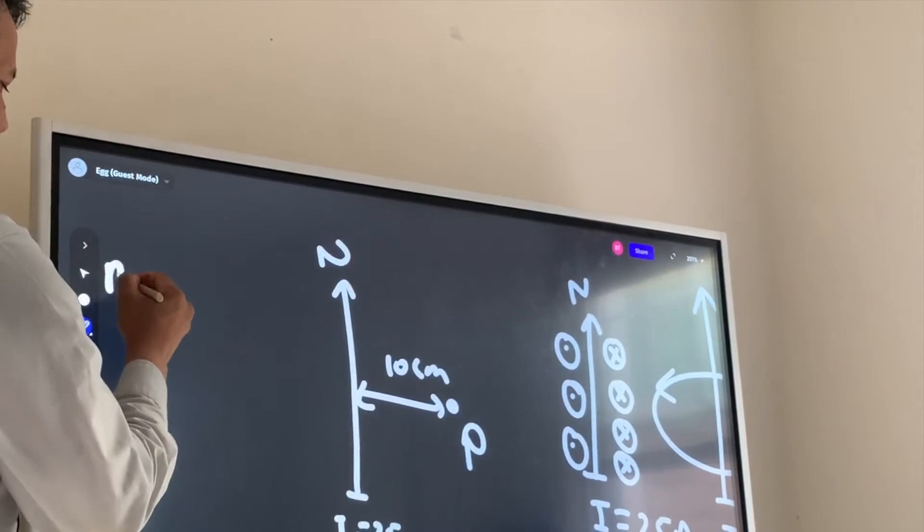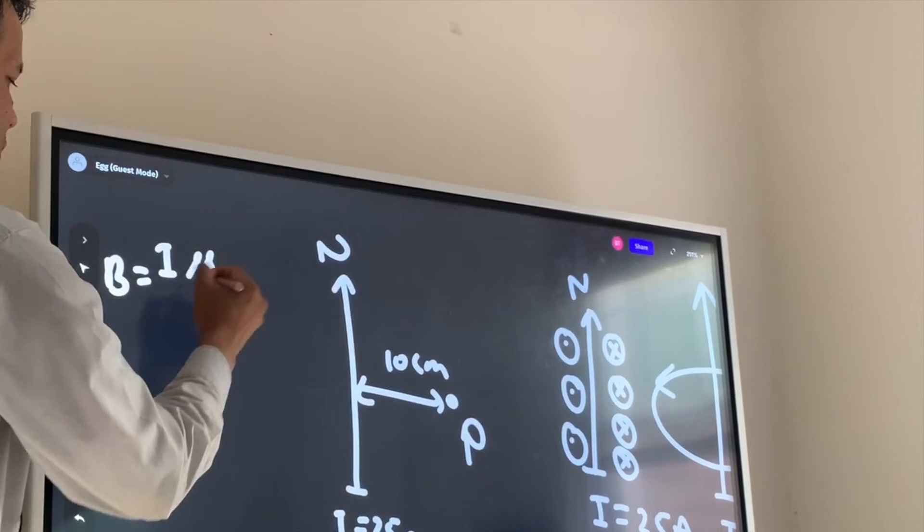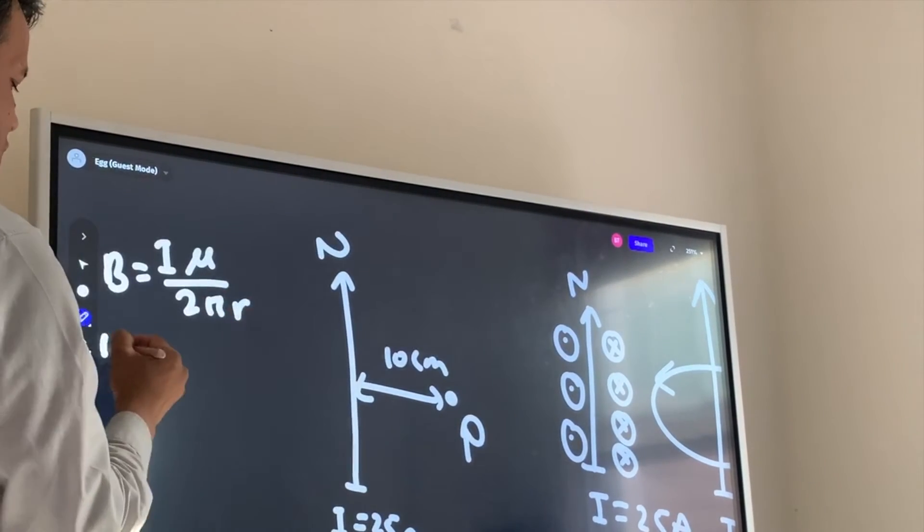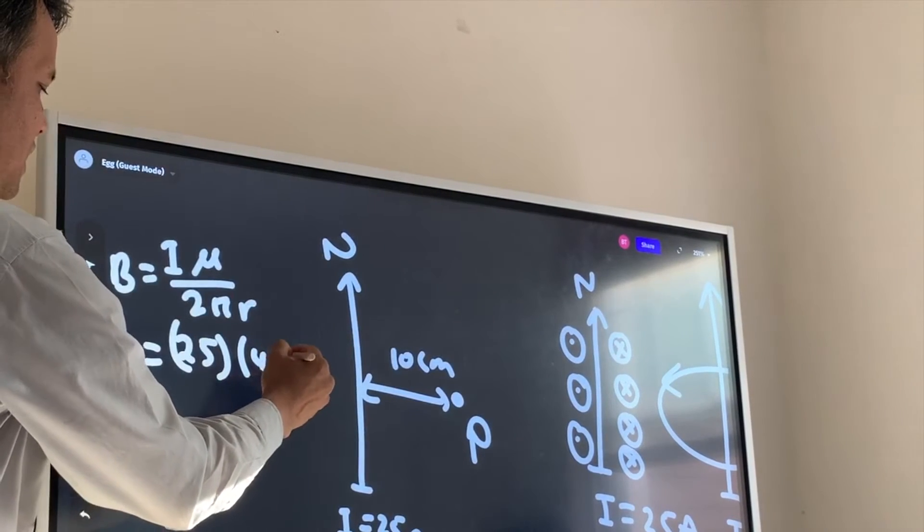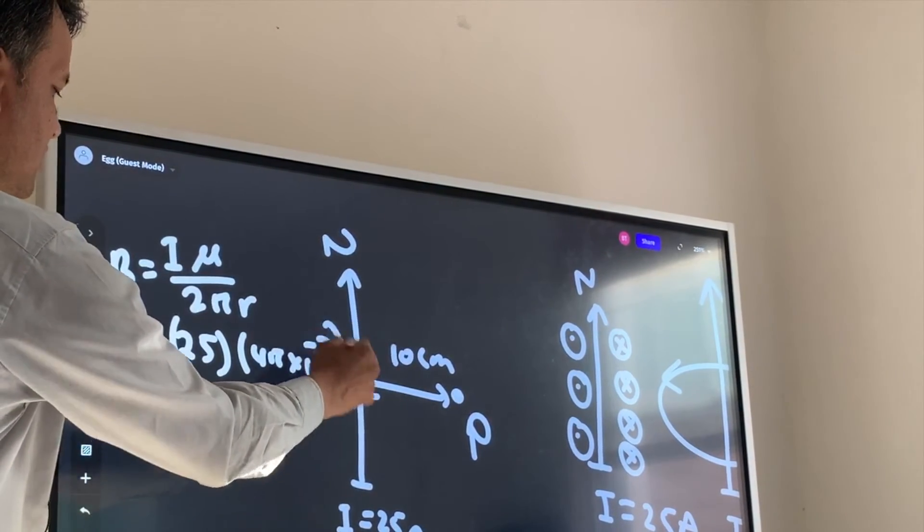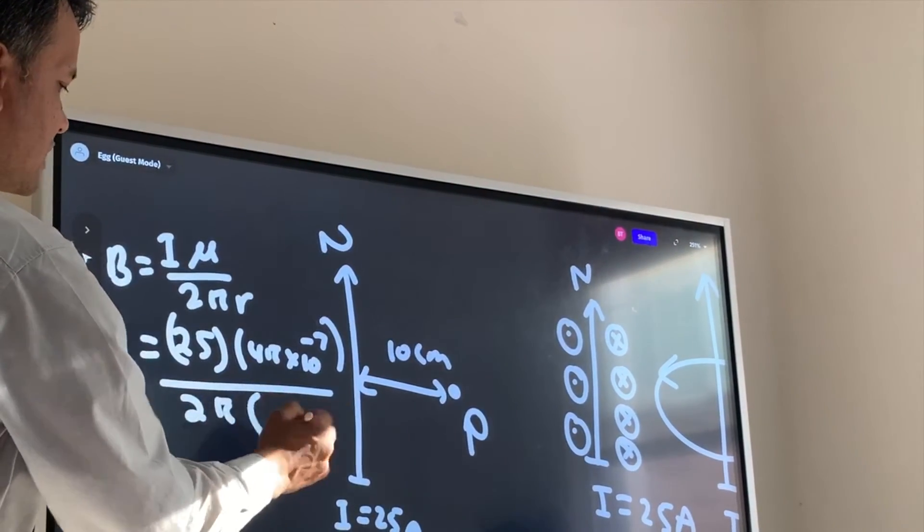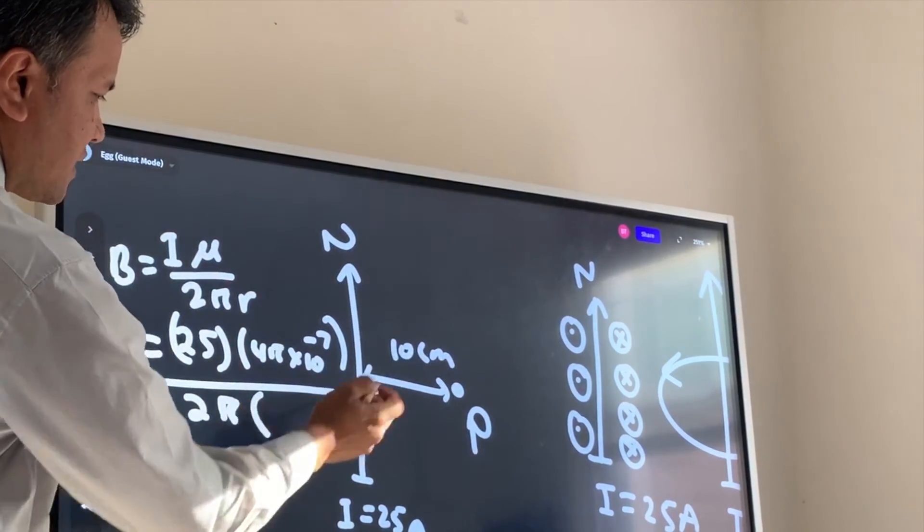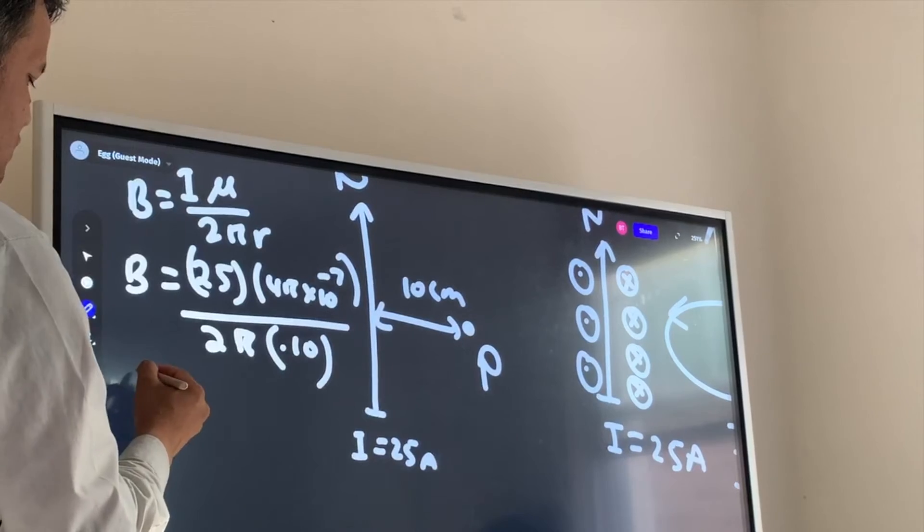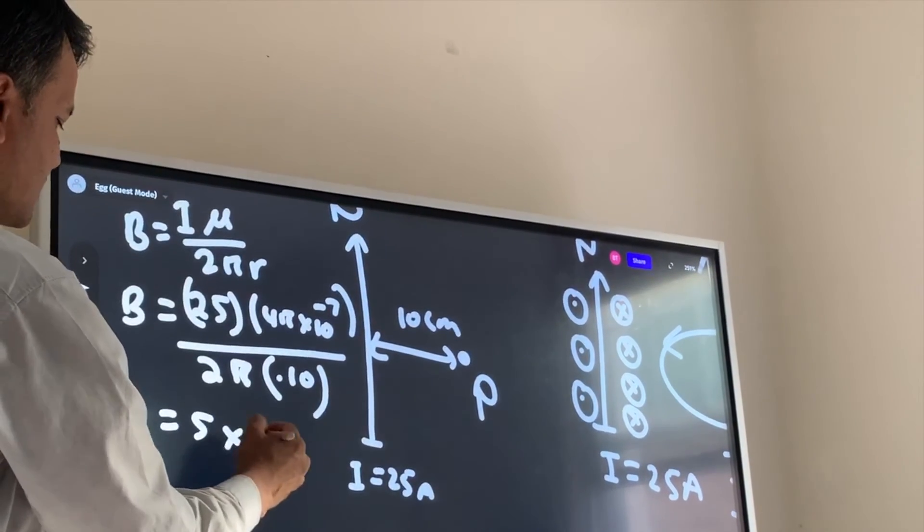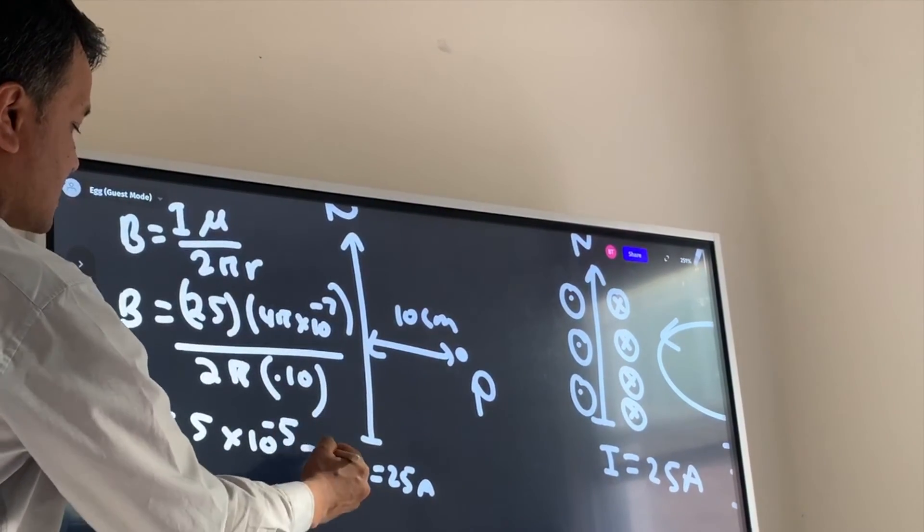Now we're going to use B equals μI over 2πr. So I is 25, and μ is 4π times 10 raised to negative 7, and 2 times π times 0.10. So B is 5 times 10 raised to negative 5 Tesla.